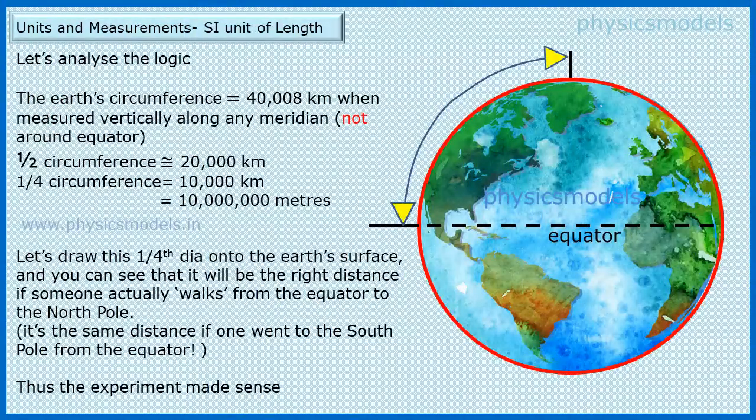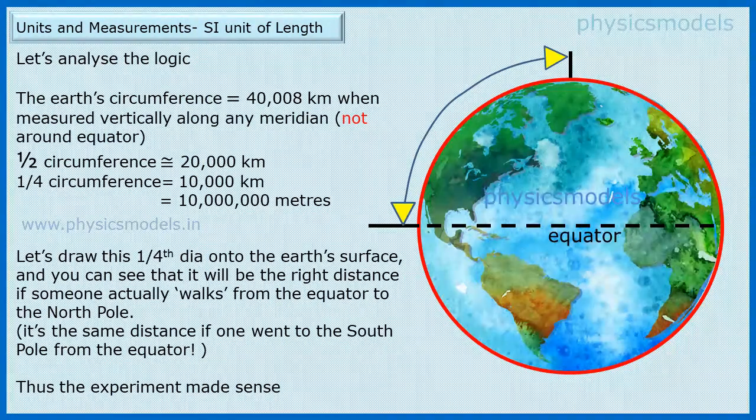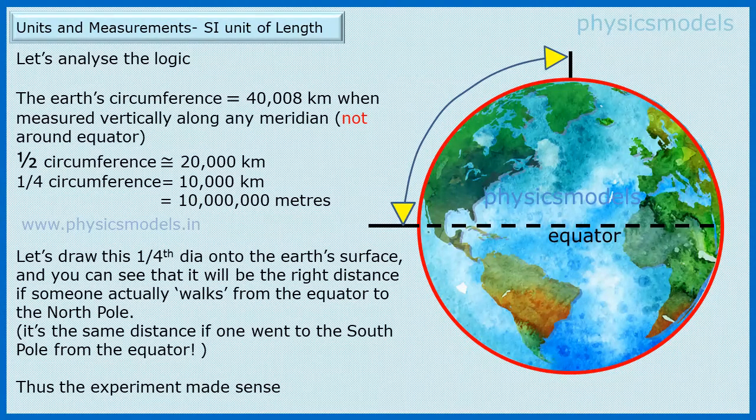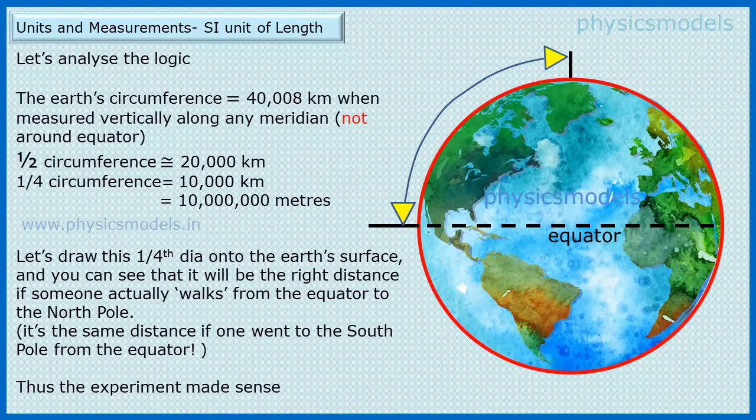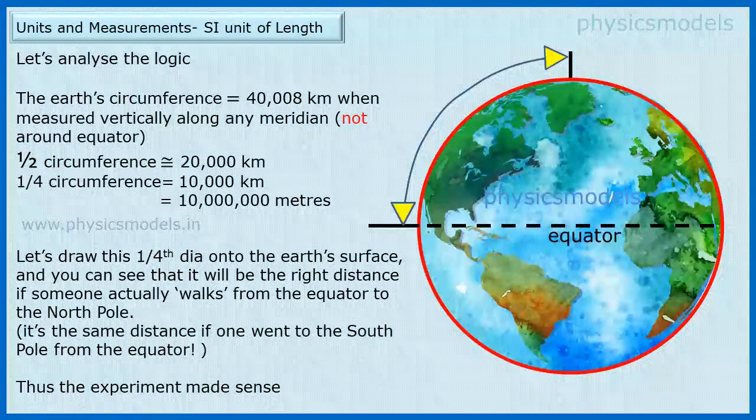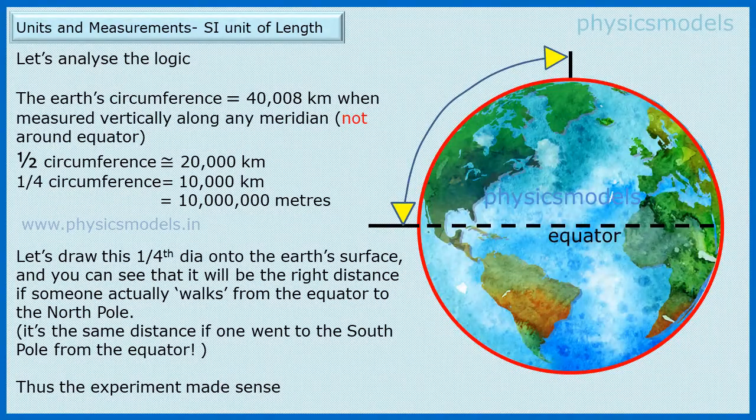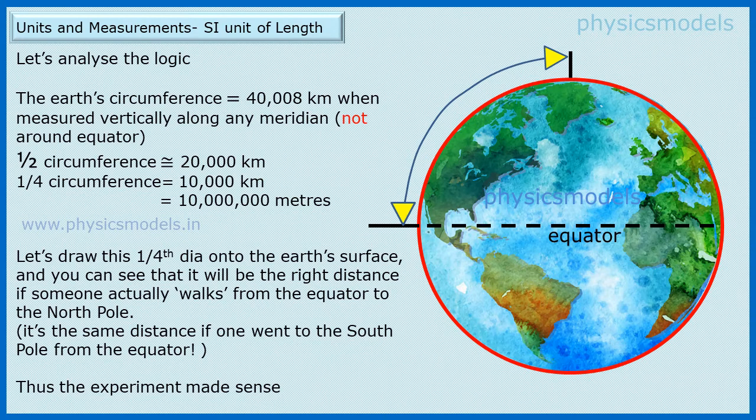I have now drawn a sketch to analyze the logic of what they did. The circumference of the earth, even as today's measurements, is 40,008 kilometers when measured vertically along a meridian. That's great that in 1790 they knew that distance. So half circumference will be 20,000 kilometers. One fourth of the circumference will be 10,000 kilometers which is what they measured. And then they divided that by 10 million to get 1 meter which is absolutely great.